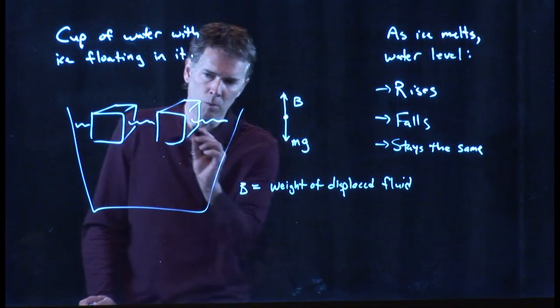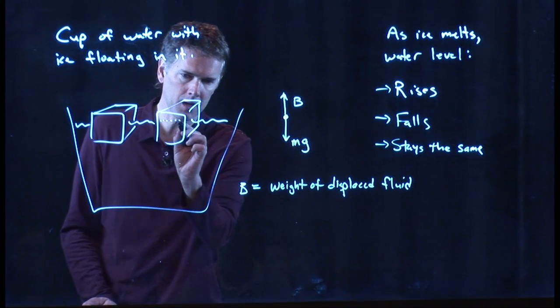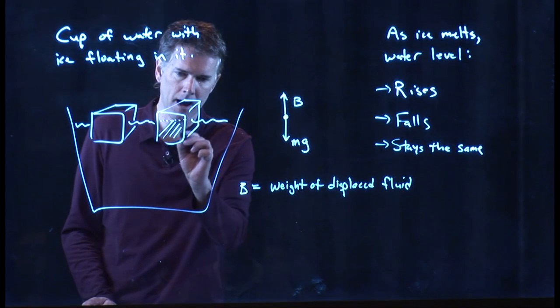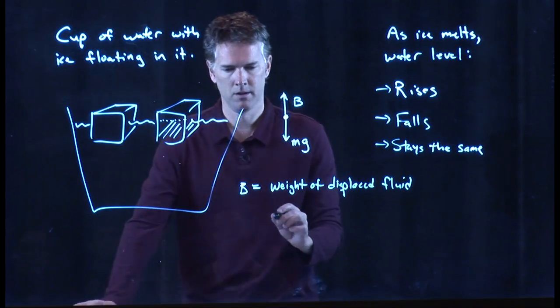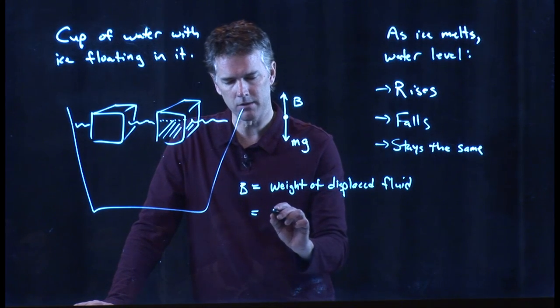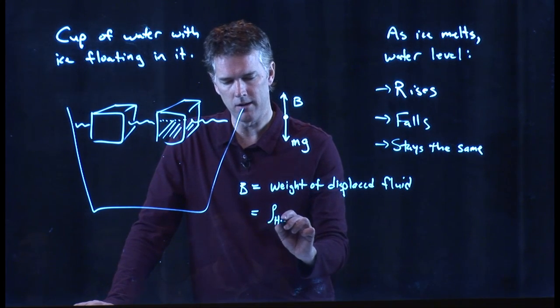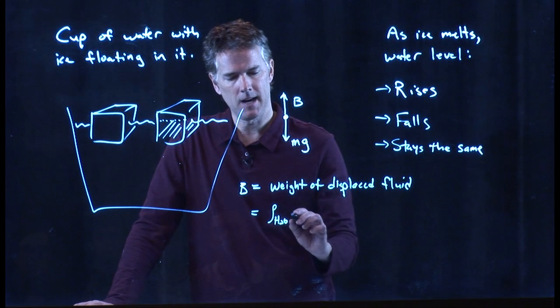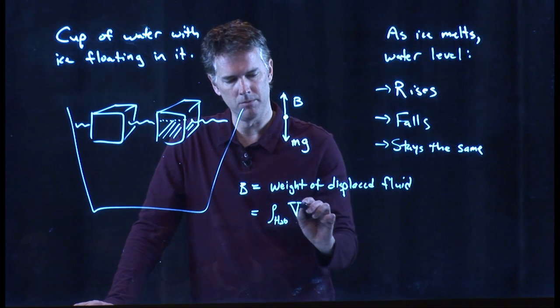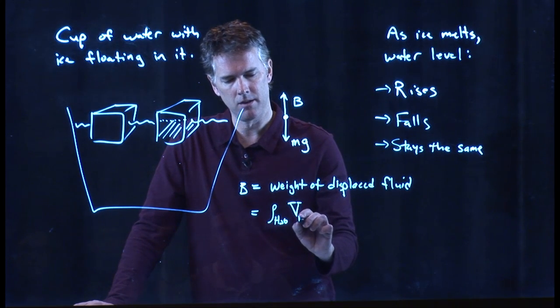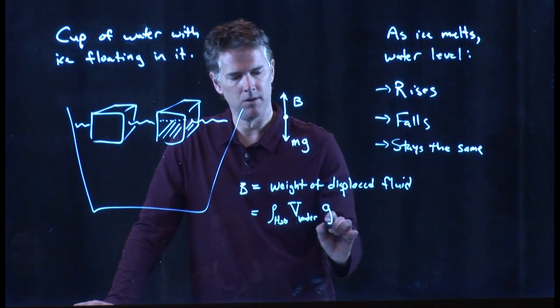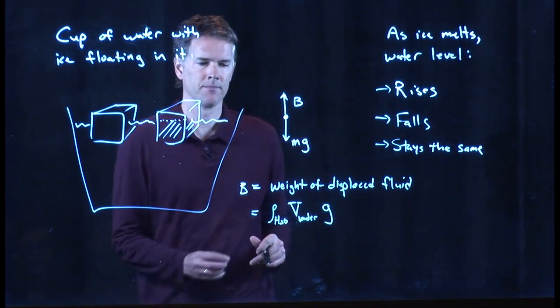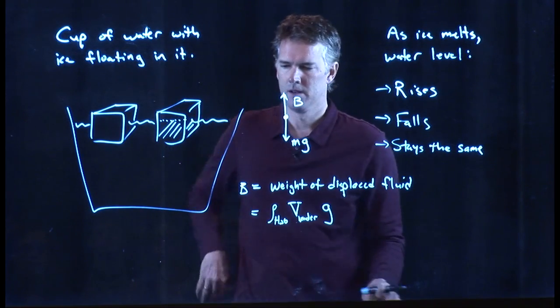So for one ice cube, we're talking about that amount that's under the water. That's the displaced fluid. And so we know what that is. That is rho of water times the volume underneath times g.